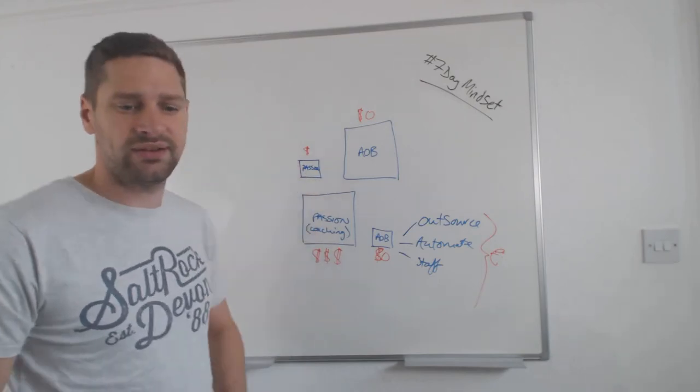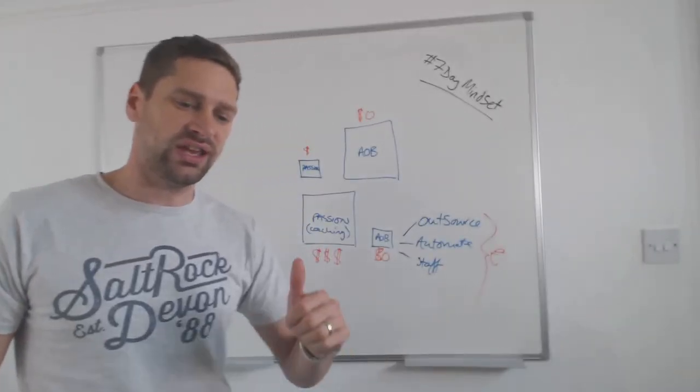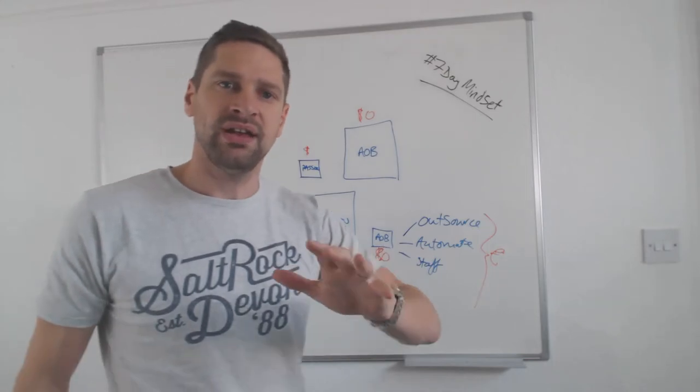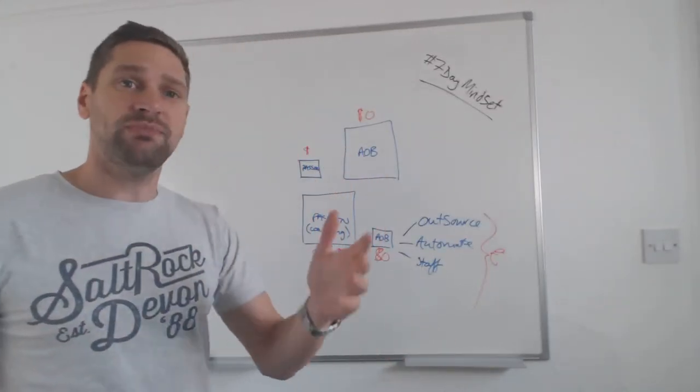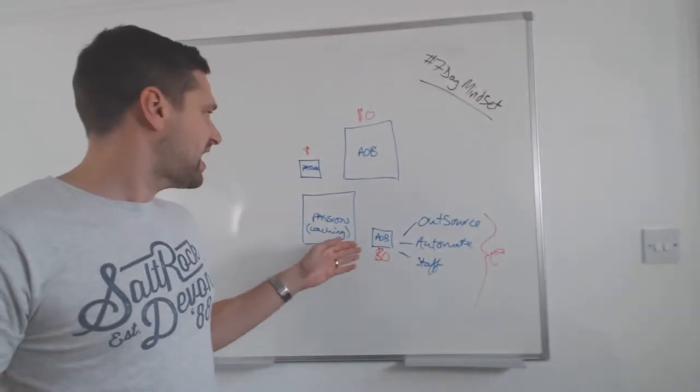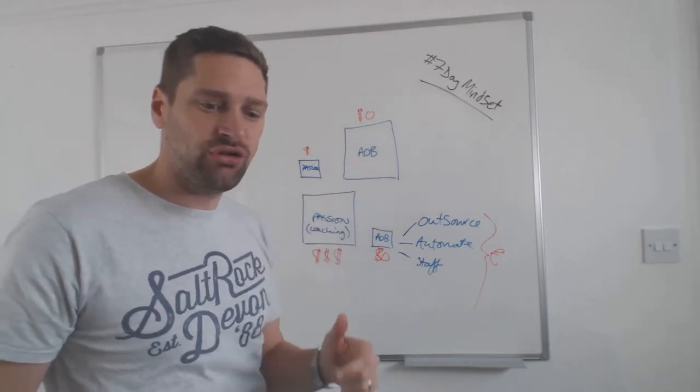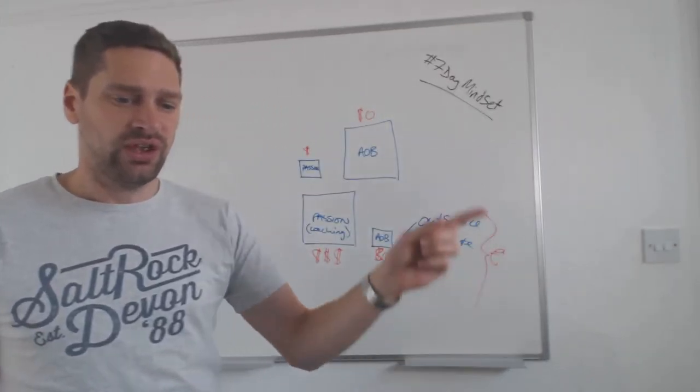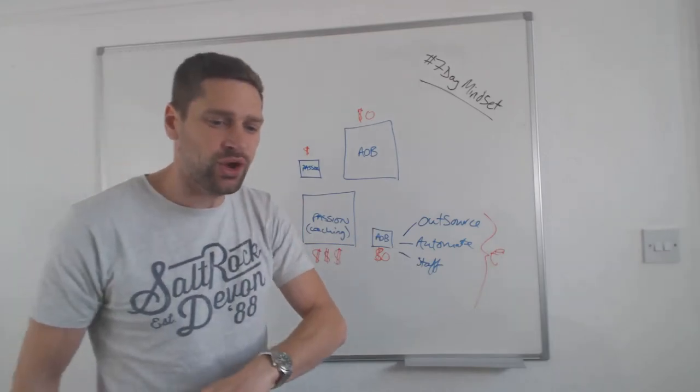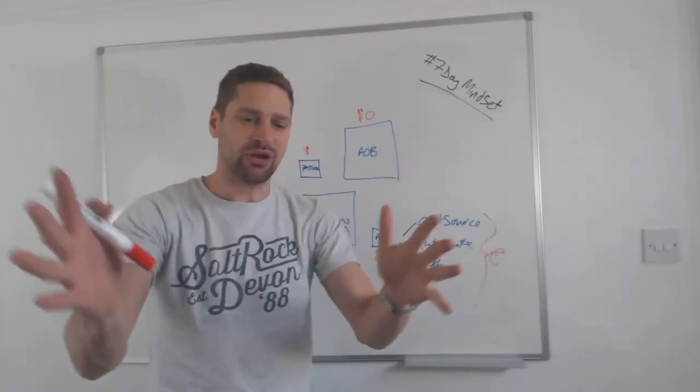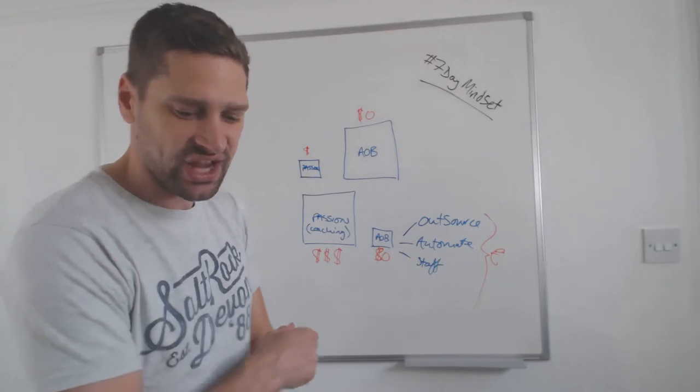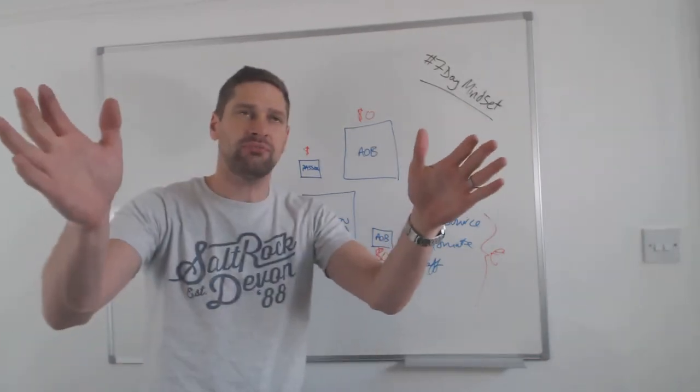So I want you to think about the stuff that you're passionate about, how much time you spend doing that, and then how many things you've got in your AOB box that you can then potentially outsource. So that's in the worksheet. Go and download the worksheet. Congratulations, we've now completed day seven of the seven day mindset challenge. Hopefully I've totally changed your mind. No, that's not right.